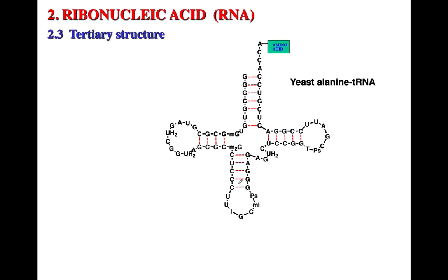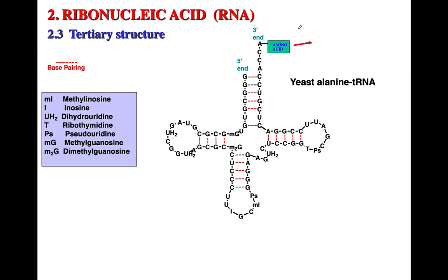Here you're looking at the tertiary structure of transfer RNA. Transfer RNA has amino acids at one end, and at the other end it has what we call an anticodon. These anticodons are able to bind to and interact with messenger RNA.